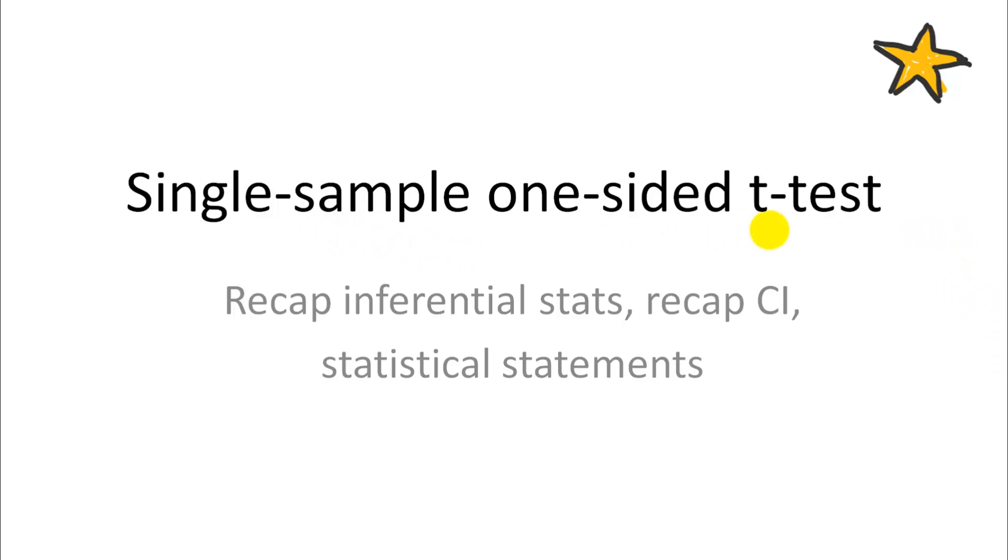So we're getting to our first actual statistical test, the single-sample one-sided t-test. We start this with a recap of inferential statistics, a recap of confidence intervals, and a recap of statistical statements we can make. Because you actually already know how the one-sided t-test works. If you understand standard errors and confidence intervals, you understand the t-test. It's just asking a slightly different question.